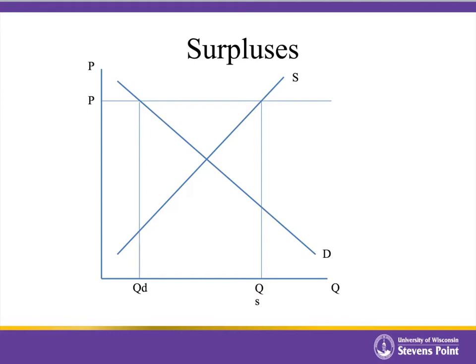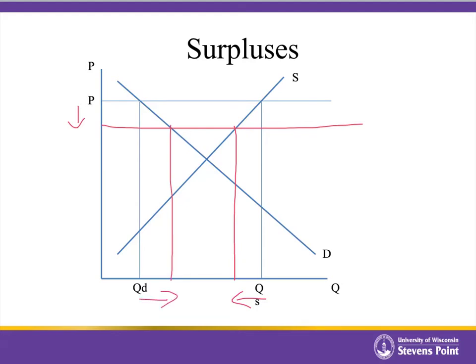With the surplus in place, the price starts to go down as sellers reduce the price to try to get rid of the product. As they do so, we move along the supply curve, and at the lower price, the quantity supplied is reduced. At the lower price, consumers are willing to buy more of the product, quantity demanded starts growing, and the size of the surplus is getting smaller. The price continues to drop until we hit the intersection where the surplus is completely eliminated.